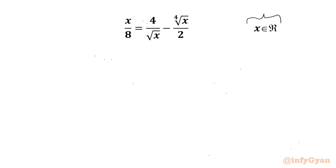Let us get started by writing the condition on x. As we have 4th root x and square root of x, for x to be real, x must be greater than 0, positive.